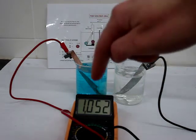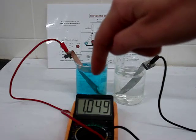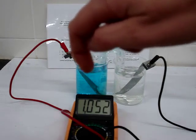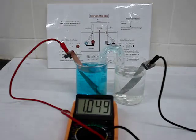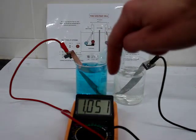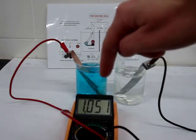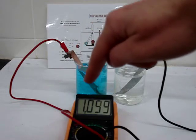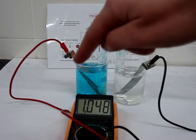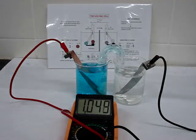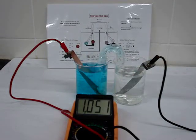The poor copper ions, they have no choice in the matter. They have to accept the electrons shoved on them by the zinc. And in so doing, they stop being copper ions and they precipitate on this copper rod, adding more copper to this rod, more copper atoms.